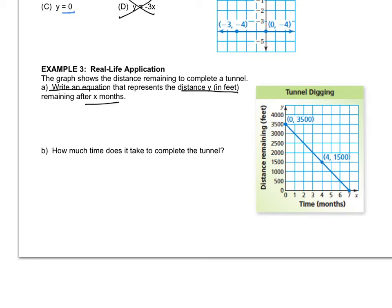So that sounds like we have a picture of a line and they want an equation. So that sounds like mx plus b to me. So let's find the m and the b. Well, the b is pretty easy. I see it's at 0, 3,500. So that's the intercept.